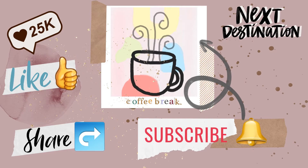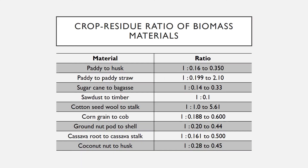Thank you in advance. Paddy to husk: 1 to 0.16–0.35. Paddy to paddy straw: 1 to 0.199–2.10. Sugarcane to bagasse: 1 to 0.14–0.33. Sawdust to timber: 1 to 0.1.